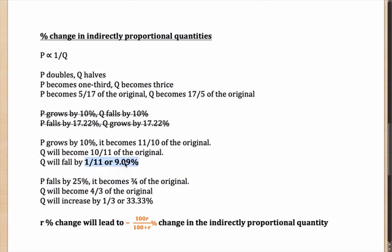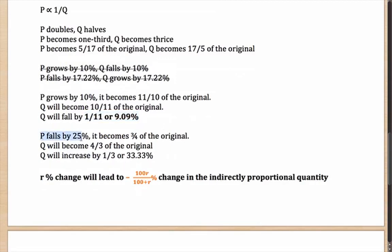As you can see, Q is not falling by 10%. Let me take another example to clarify this idea. Let's say P falls by 25%, which means it becomes 3/4 of the original. If P is becoming 3/4 of the original, the quantity it is inversely proportional to, that is Q, will become 4/3 of the original, which means it will increase by 1/3 or 33.33%.